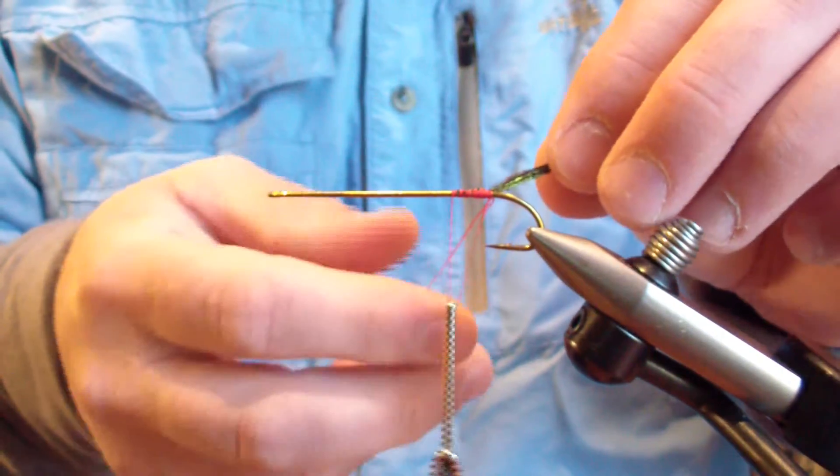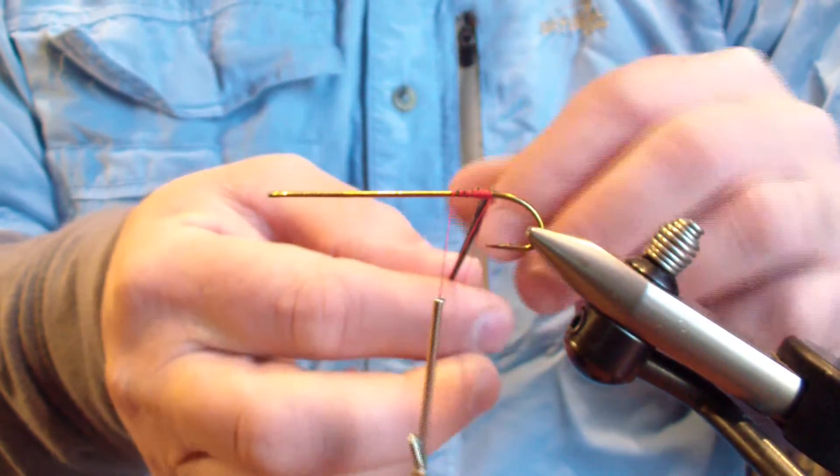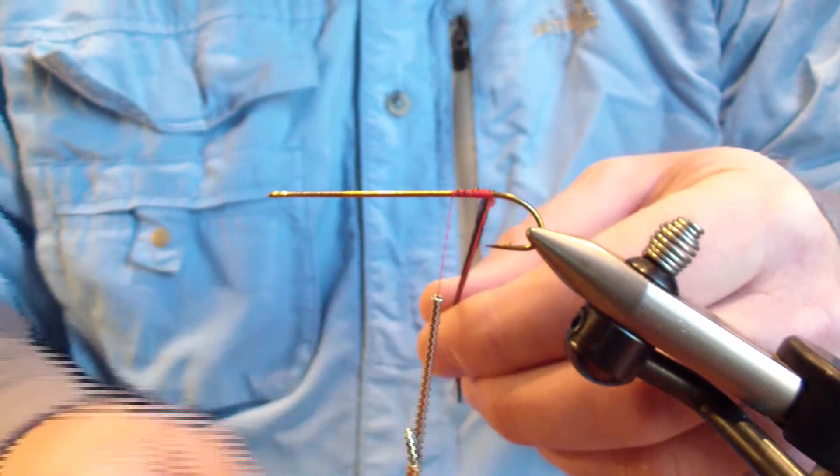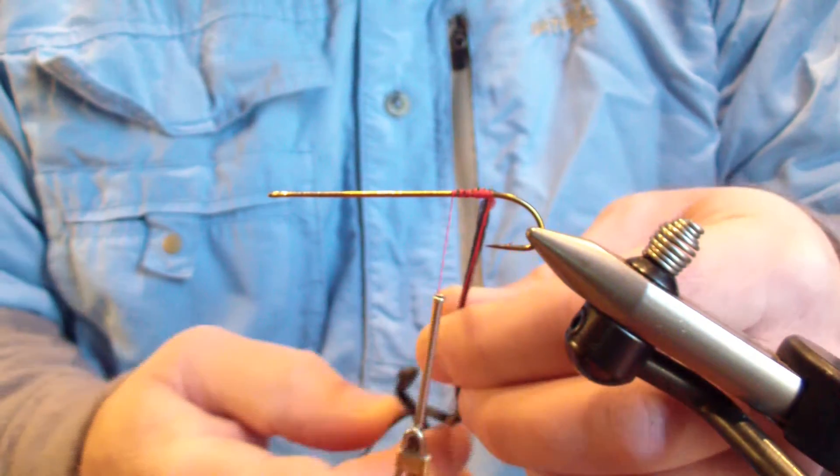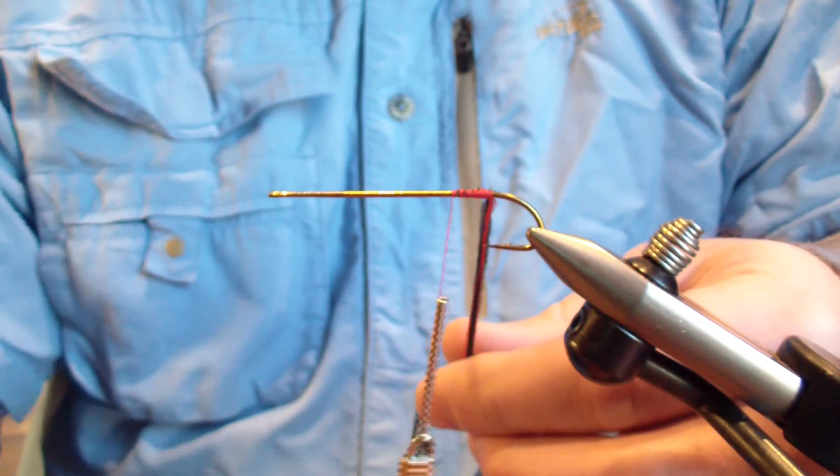And then what I do is I open the loop with my fingers and I sweep the peacock curl back into that loop. And then I grab it with my hackle pliers, keeping everything with even tension.